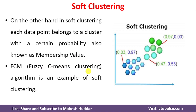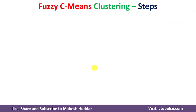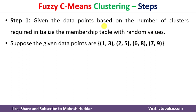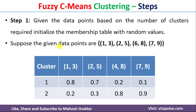We will discuss fuzzy c-means clustering algorithm in detail. The first step is: given the data points and based on the number of clusters required, we need to initialize the membership table with random values. In this example, we have been given four data points, each containing two components or features. Let us assume that we need to divide this data into two clusters, so we need to create the membership table accordingly.